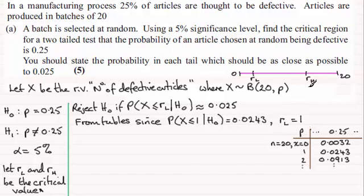Now, to get the upper critical value, what we would be doing is rejecting the null hypothesis. So we just put this down, reject the null hypothesis if the probability of X being greater than or equal to the upper critical value RH, given that the null hypothesis is true, in other words, P equals 0.25, is also as close as possible to 0.025.